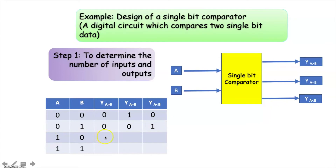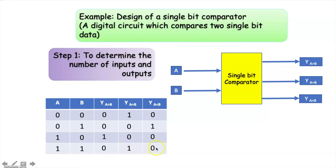For the third case, A is greater than B, so the output for A greater than B should be 1, and the other two outputs are 0. For the fourth case, when A equals 1 and B equals 1, A is equal to B, so the output for A equal to B should be 1, and the remaining outputs are 0. This completes the truth table representation of the single-bit comparator.